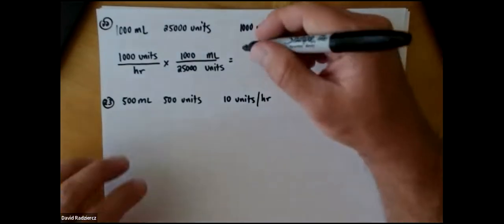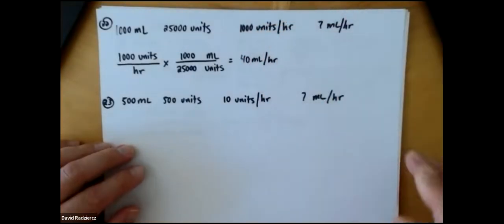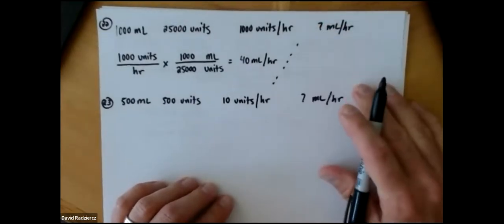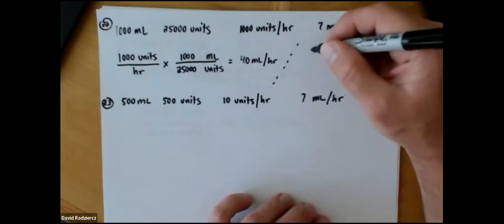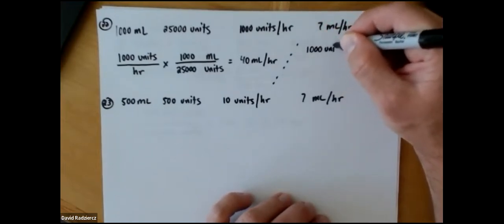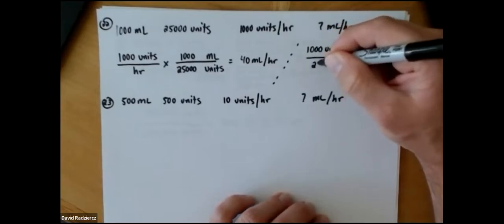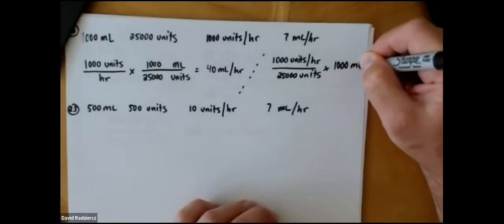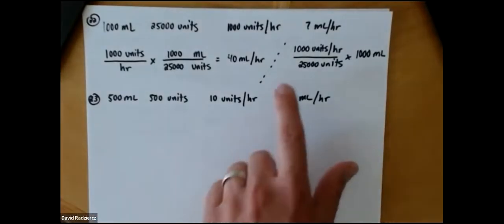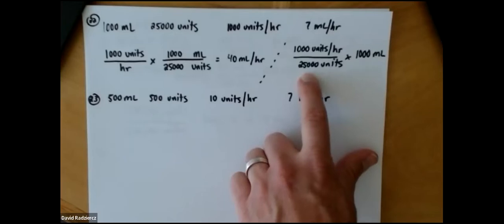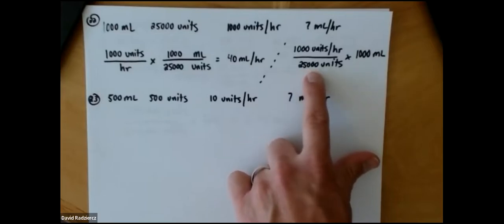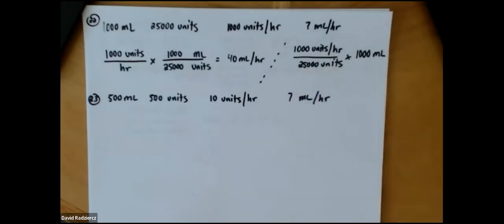You'll get 40 milliliters per hour. If you prefer, we can do a variation of this that is very similar to the ordered over available setup, where you write your 1,000 units per hour over your available of 25,000 units, times the 1,000 mL. If you do it that way, you'll get to the same answer: 40 milliliters per hour. Some nursing students prefer to see it look like this, which is very close to the ordered over available setup.